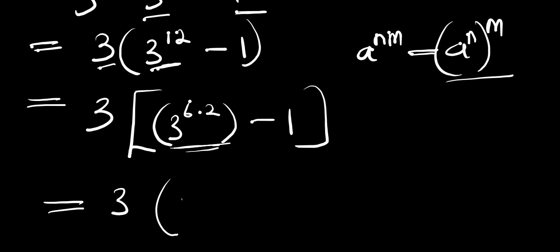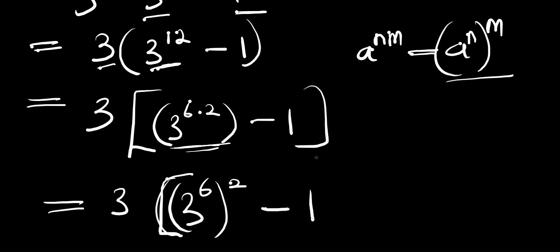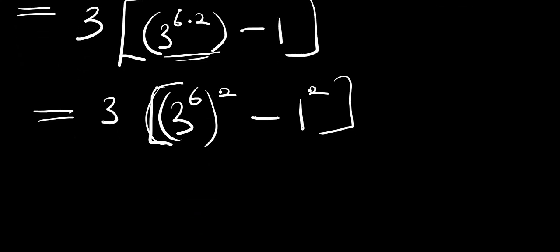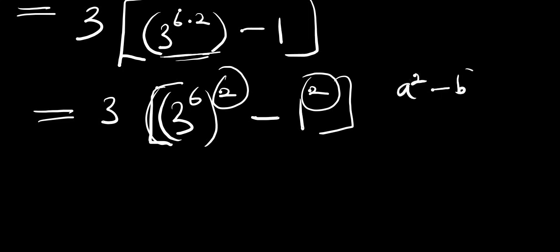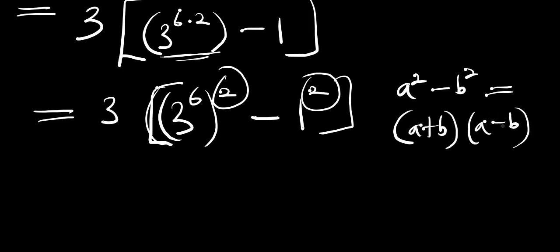Applying that identity gives us 3 times ((3^6)^2 minus 1^2). We can now use the difference of two squares: a^2 minus b^2 equals (a+b)(a-b), where a = 3^6 and b = 1.